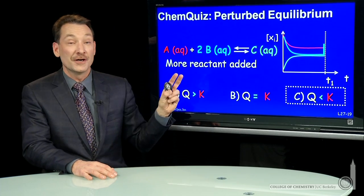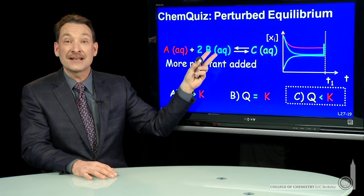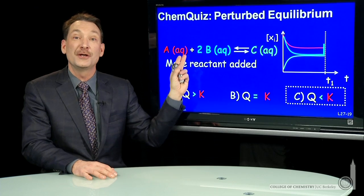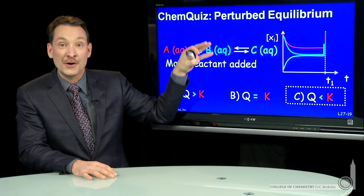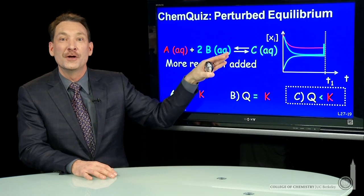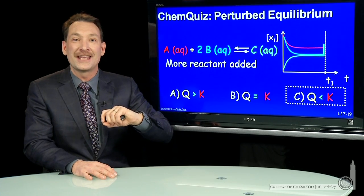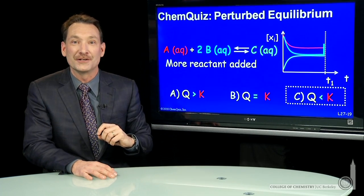What do we expect would happen here? Well, we've increased a reactant concentration. We expect the equilibrium to shift towards products, so that numerator in the reaction quotient would get larger until Q is equal to K again, and equilibrium is reestablished.